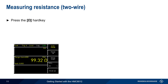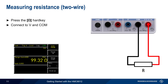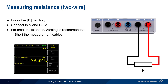Next let's look at resistance measurements, which are enabled by pressing the ohm hard key. Resistance is measured by connecting to the V and COM jacks, and the polarity of the cables is not important. Note that when measuring very small resistances, zeroing is recommended. Zeroing applies an offset correction to remove the effects of cables, contact resistance, etc. The zeroing process is performed by shorting the measurement cables or leads together, and then pressing the null hard key on the front of the HMC.